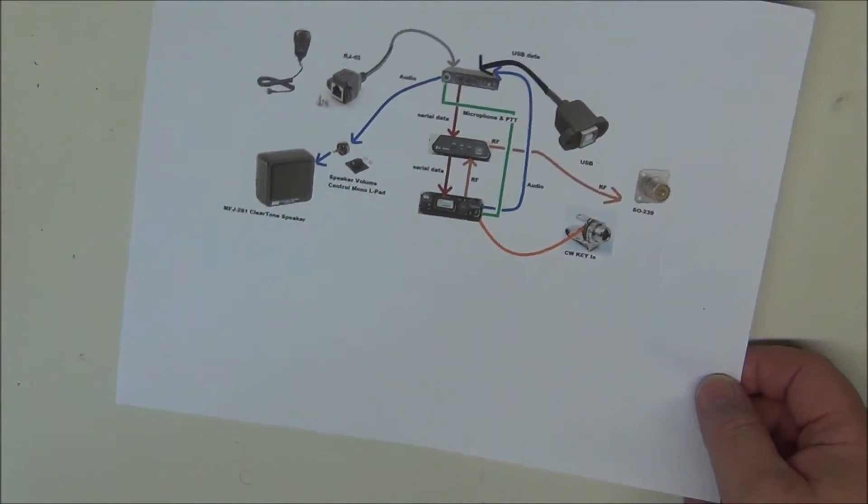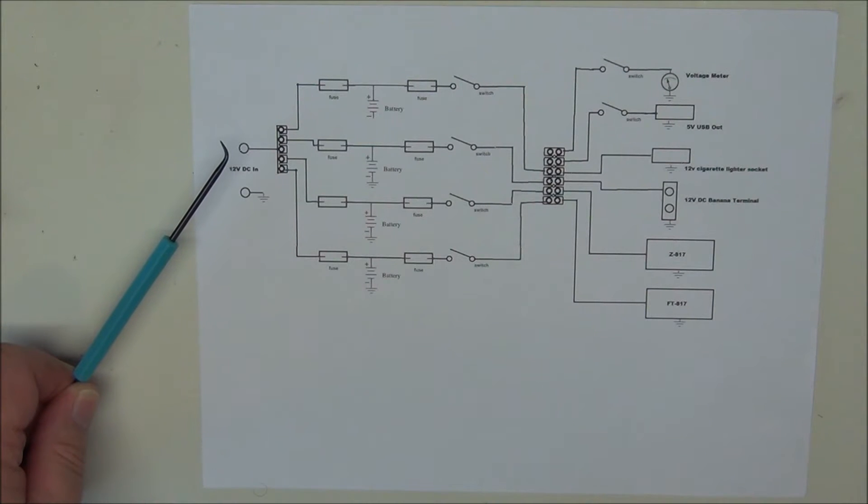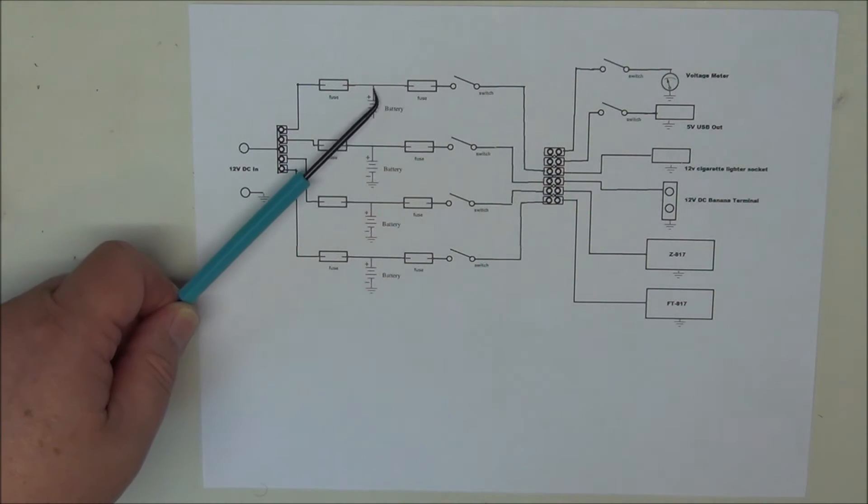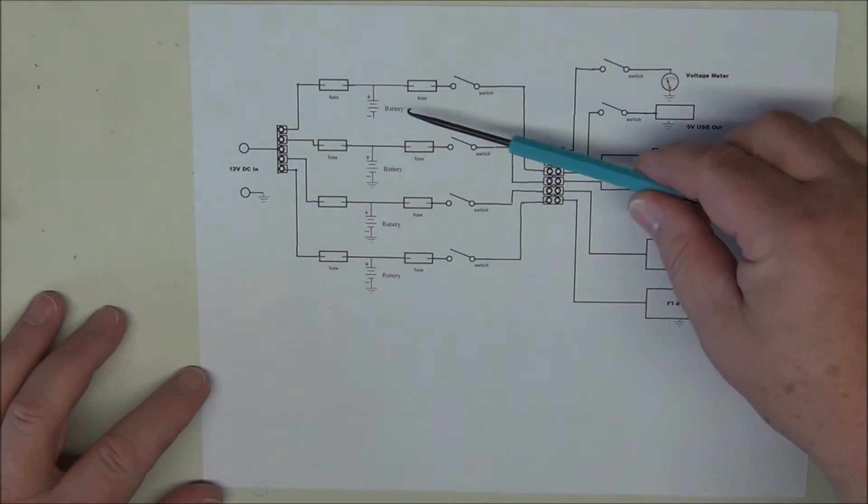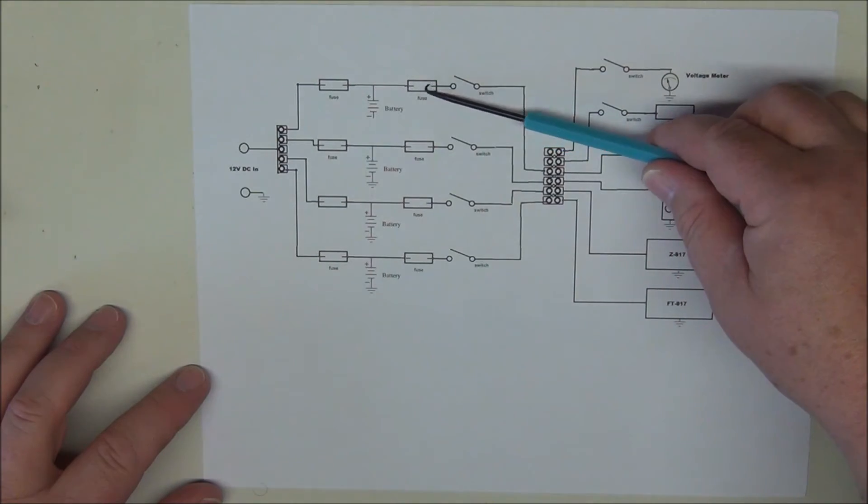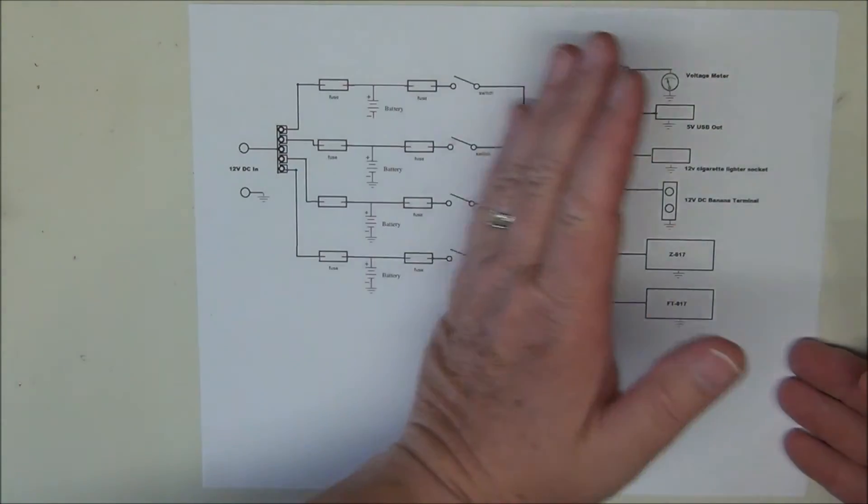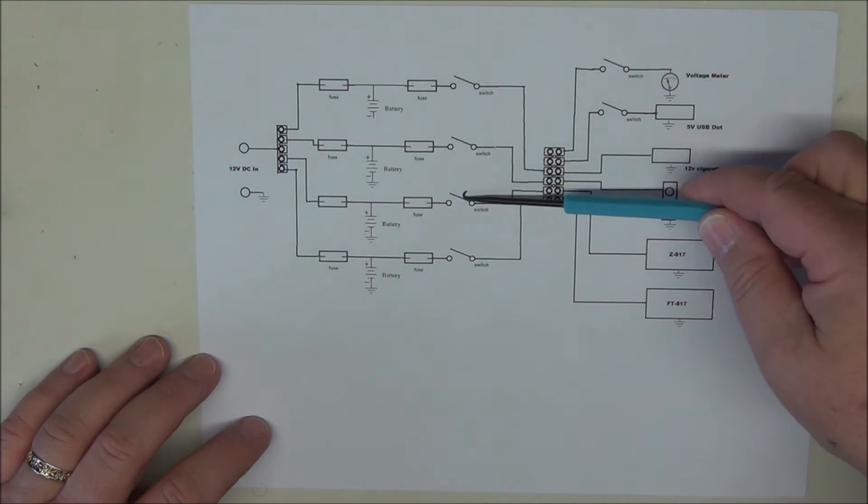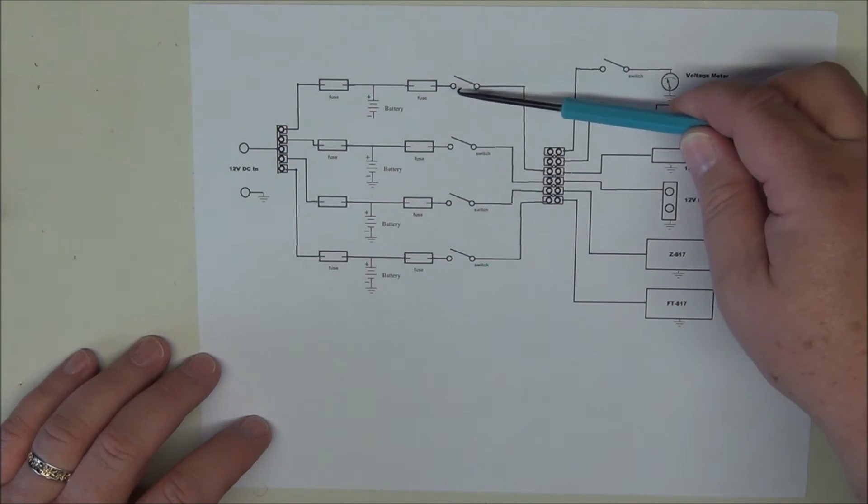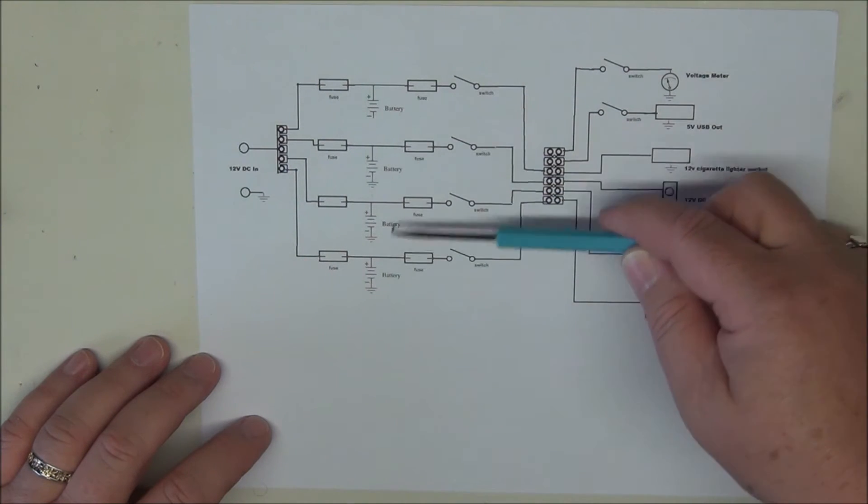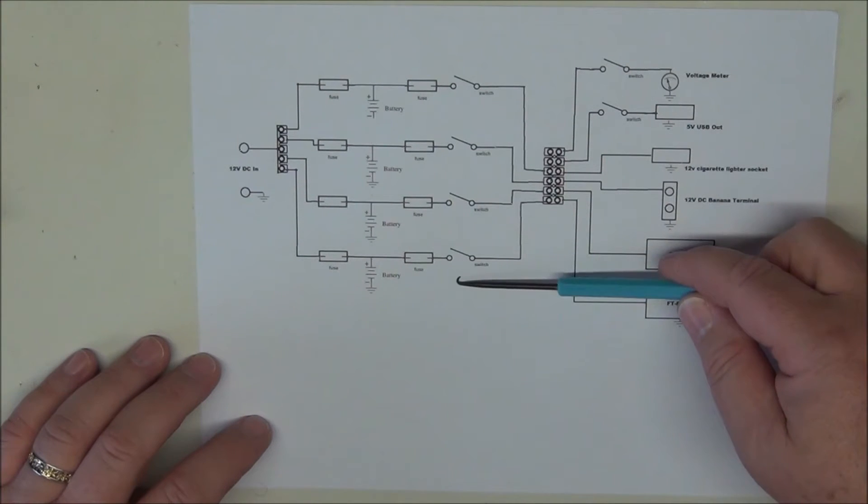Okay, so here's the schematic for the power distribution. On the top of the panel we'll have a panel mounted Anderson power pole connector. We're going to be coming into a terminal block through fuses into connecting to the positive side of each battery. From the battery we're going to have a set of fuses which will be going out to the radio and equipment with a set of switches. The switches will allow us to either use each battery independently or we can turn them all on and use them in parallel.